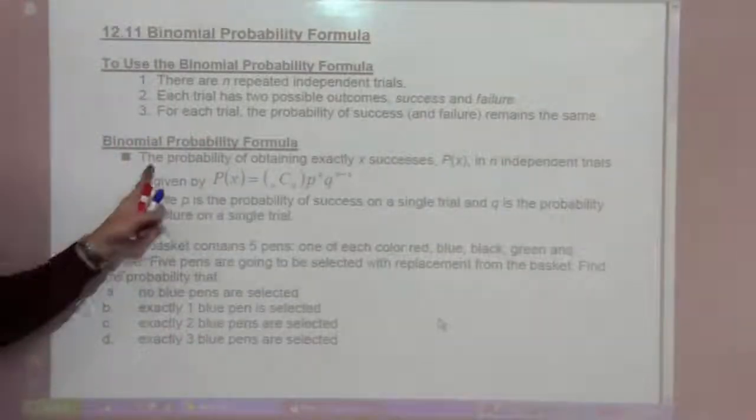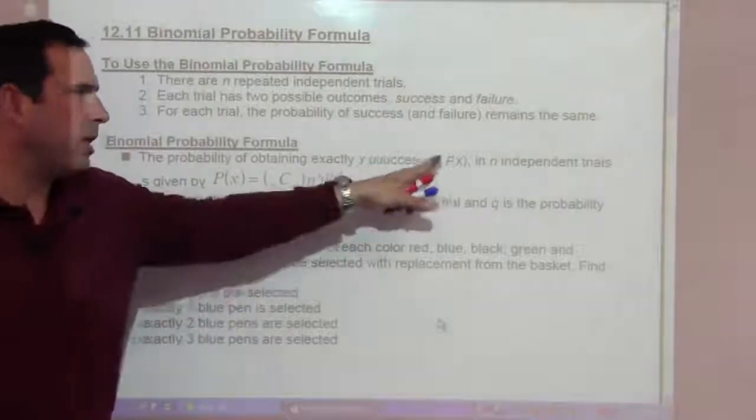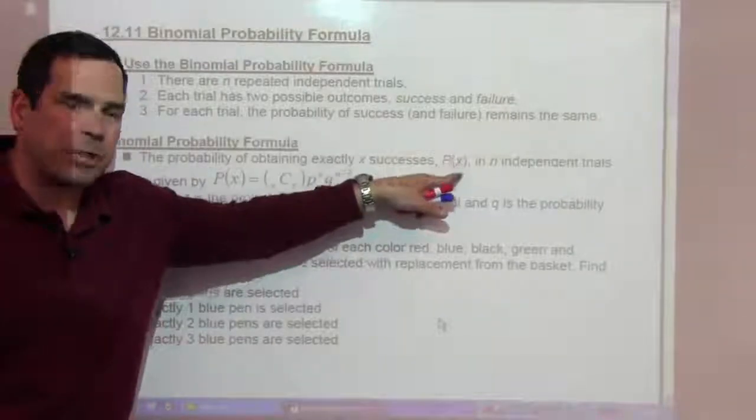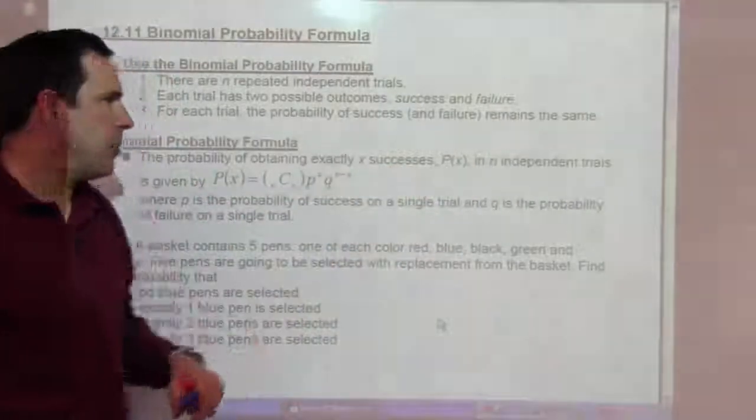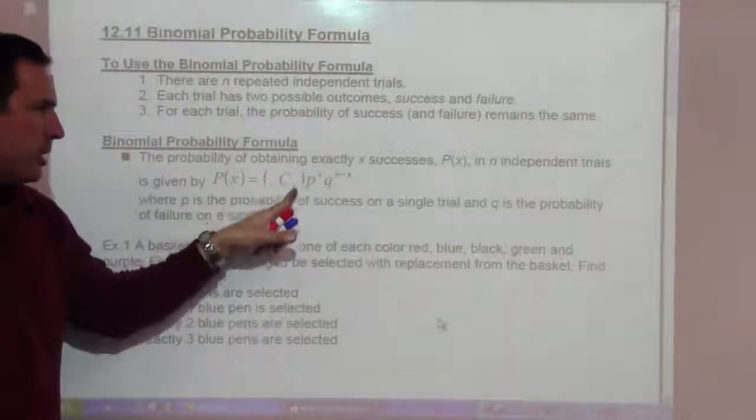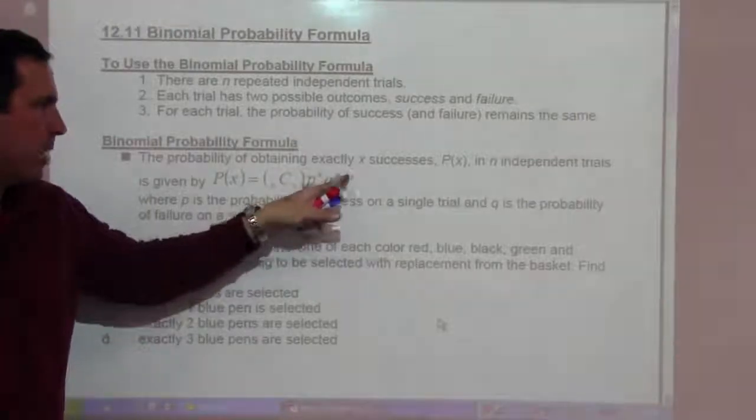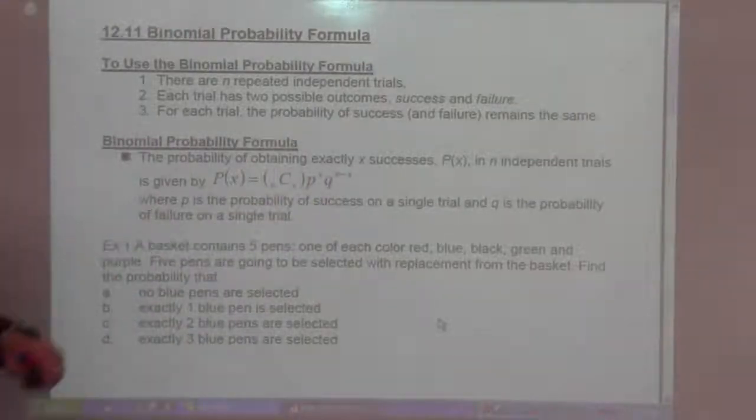So there are independent events. Probability of obtaining exactly x successes is what we are after. So p of x, and n independent trials is given by p of x equals n choose x times p to the x times q to the n minus x, where p is the probability of success on a single trial and q is the probability of failure on a single trial.